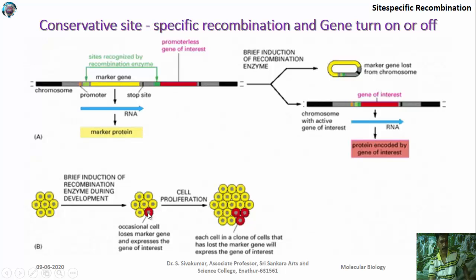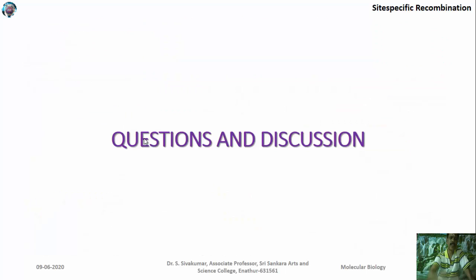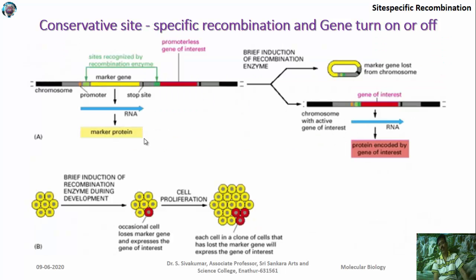When the same cell proliferates, the number of cells without the marker gene increases. The expression of the new gene is possible when this marker gene is released. If this marker gene is added to the cell, it prevents the expression of that particular gene. So when the marker gene is removed, the gene is turned on; when it is added, the gene is turned off. That is how conservative site-specific recombination regulates gene expression.